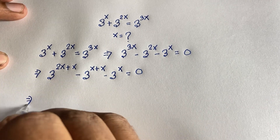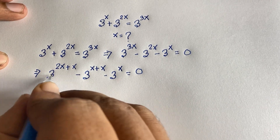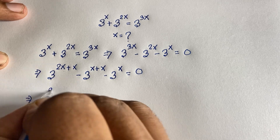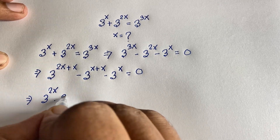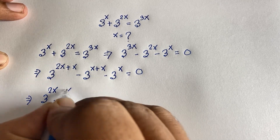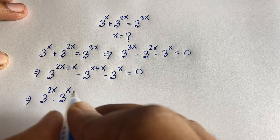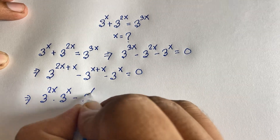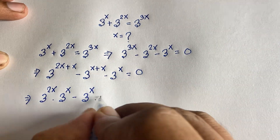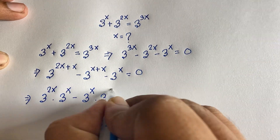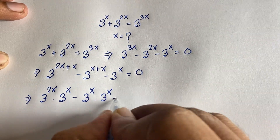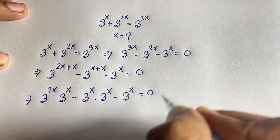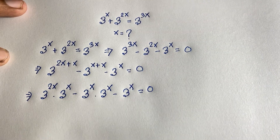According to the exponential law, 3 to the power 3x becomes 3 to the power 2x times 3 to the power x, and 3 to the power 2x becomes 3 to the power x times 3 to the power x. So the expression is: 3 to the power 2x times 3 to the power x, minus 3 to the power x times 3 to the power x, minus 3 to the power x, equals 0.